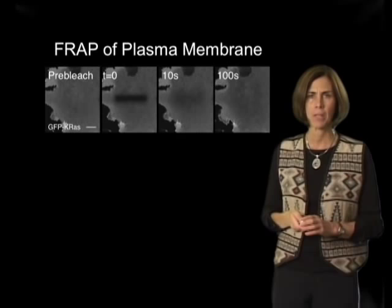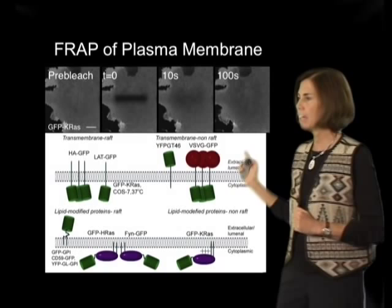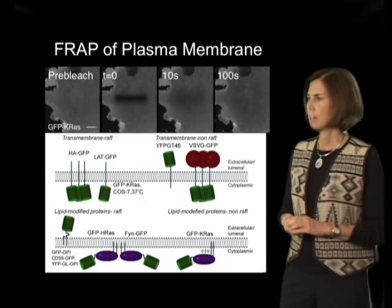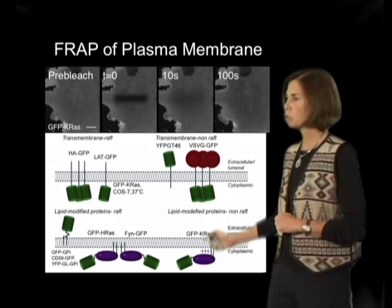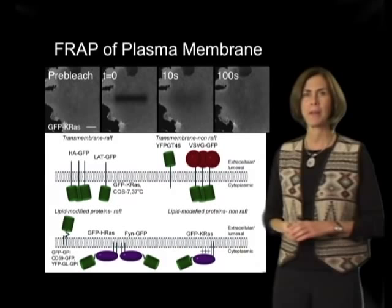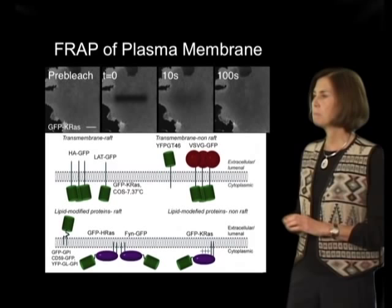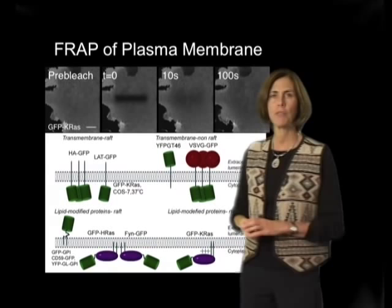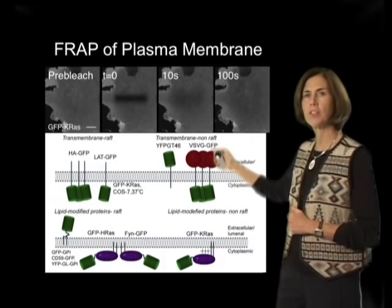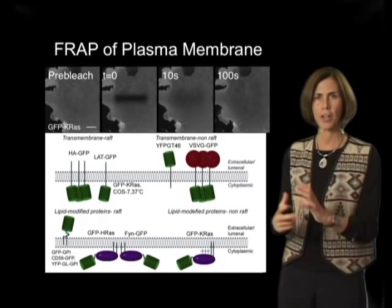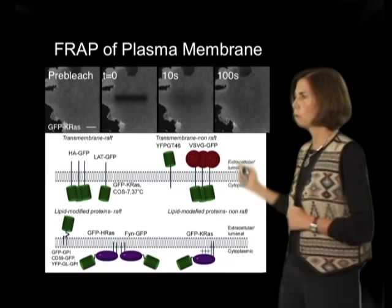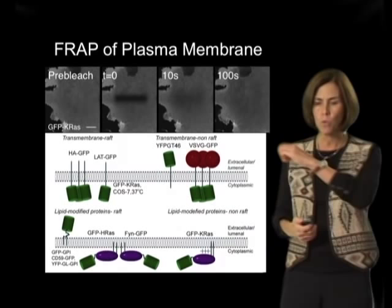We and others have used photobleaching to look at the behavior of many other plasma membrane-associated proteins. Some of these proteins are full transmembrane proteins embedded in the bilayer, and others are just lipid-anchored. Using photobleaching techniques, we've been able to define the diffusion coefficients of these molecules and show that different proteins have different diffusion coefficients, largely dictated by how they're integrated into the membrane bilayer. Importantly, many of these molecules change their diffusion coefficient in response to signaling cues, where molecules undergo clustering, aggregation, or interaction with cytoskeletal elements.